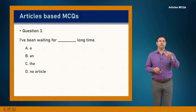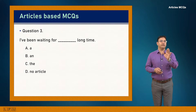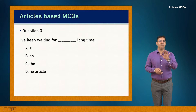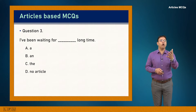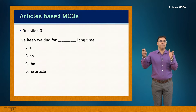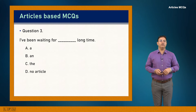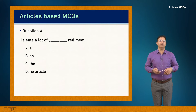Question 3: I've been waiting for dash long time. 'A long time' is correct — 'a' comes before consonant sounds and 'an' before vowel sounds. 'Long time' as a phrase becomes one entity, so 'a long time' is fine. Answer is A.